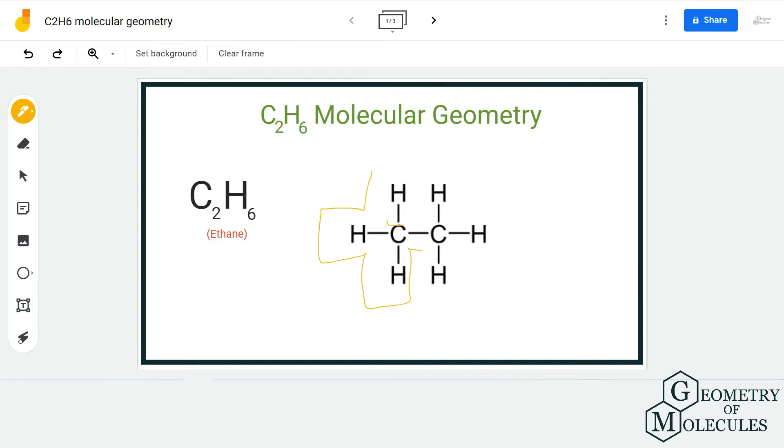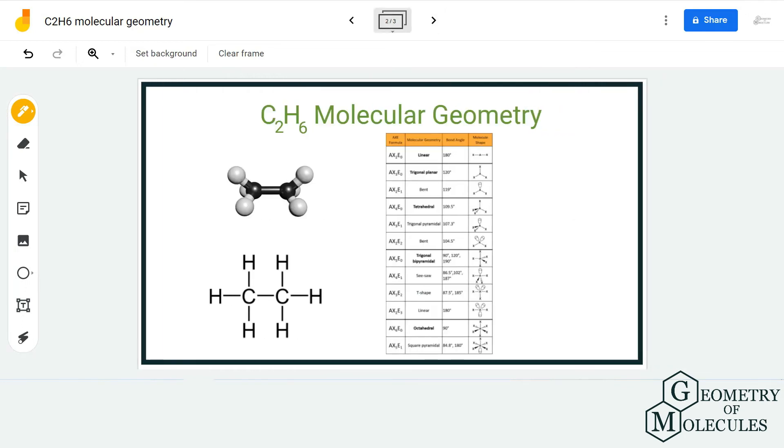If you use the formula of AXN notation, the AX notation for this would be AX4, and that corresponds to a tetrahedral structure.